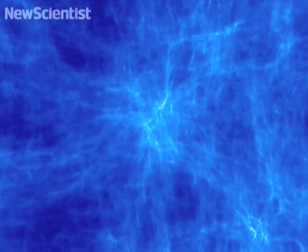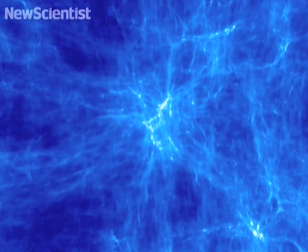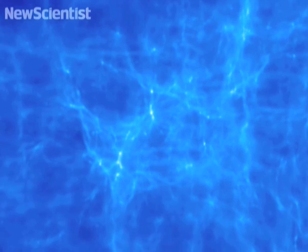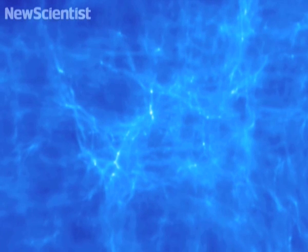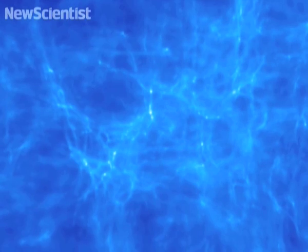Very dense regions are shown in white, slowly collapsing under their own gravity and building up heat in the process. Hydrogen atoms eventually form molecules, radiating heat and causing the developing core to collapse further to form the beginning of a star.